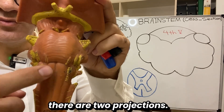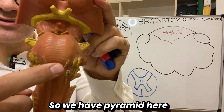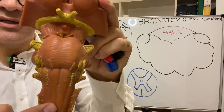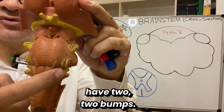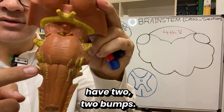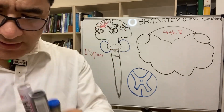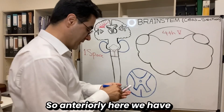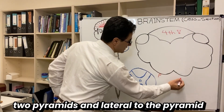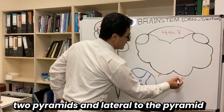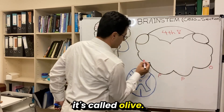There are two projections called the pyramid. Lateral to the pyramid at the top we have two bumps called the olive. So internally we have two pyramids, and lateral to the pyramid we have this bulge area called the olive.